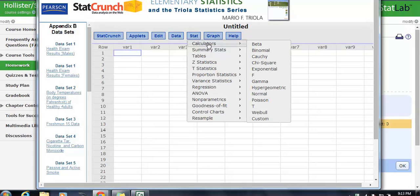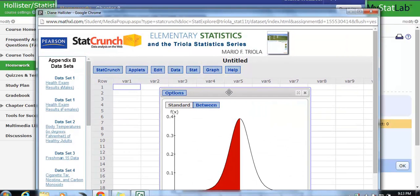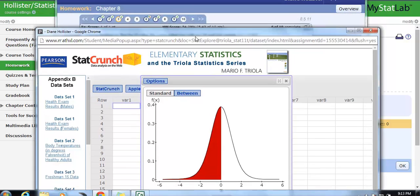So just like you went to the calculators before for binomial and Poisson, this time we're going to go to t, and we're going to enter the values we just read in the problem.